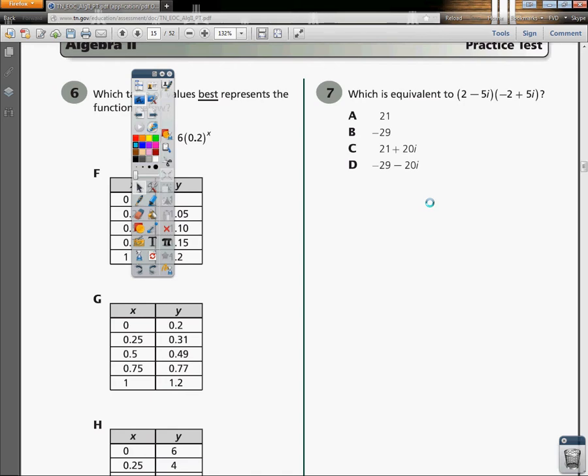which is equivalent to 2 minus 5i times the quantity negative 2 plus 5i? So since there's nothing between our parentheses here, we know this has to be a multiply question because they're touching. When they touch, they multiply, kind of like hamsters.